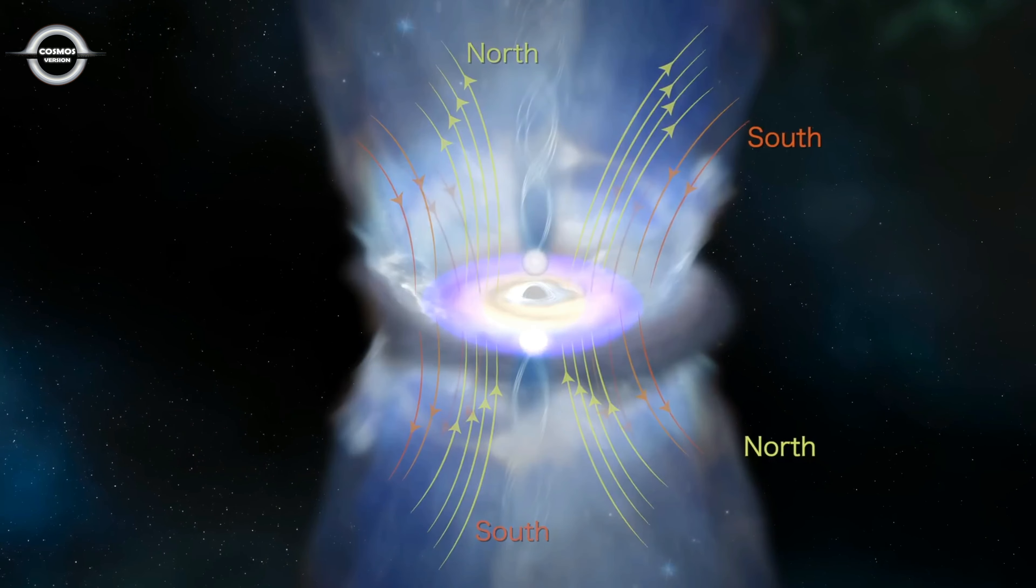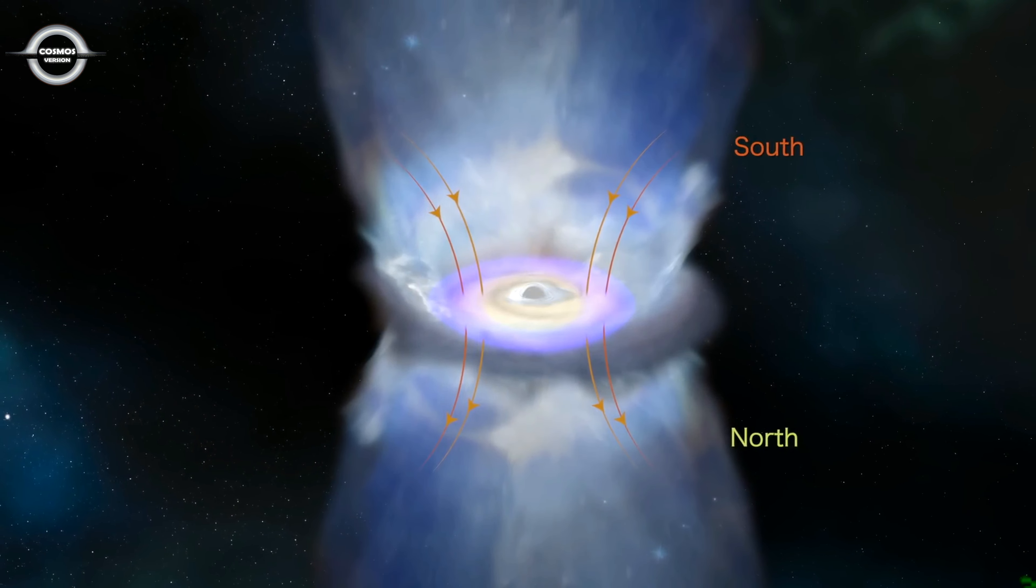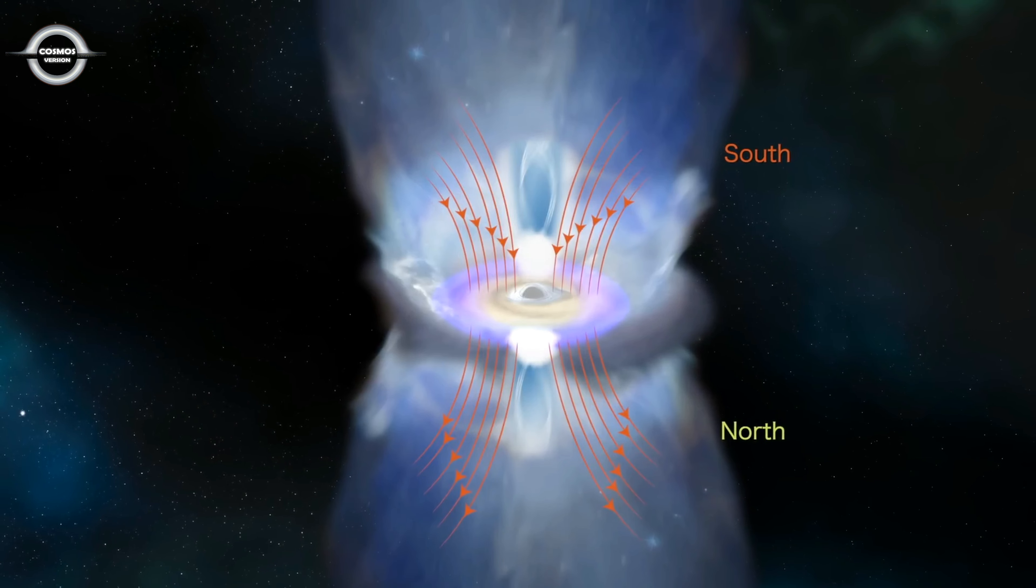The flipped magnetic field gained strength, restoring the X-ray corona. But the inward flow of matter is still high, so this emission is stronger than it was before the flare.